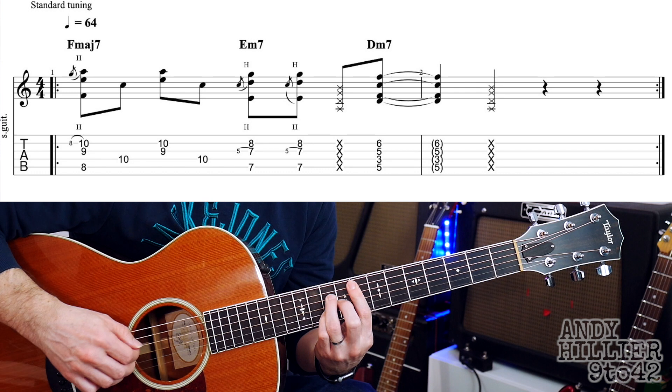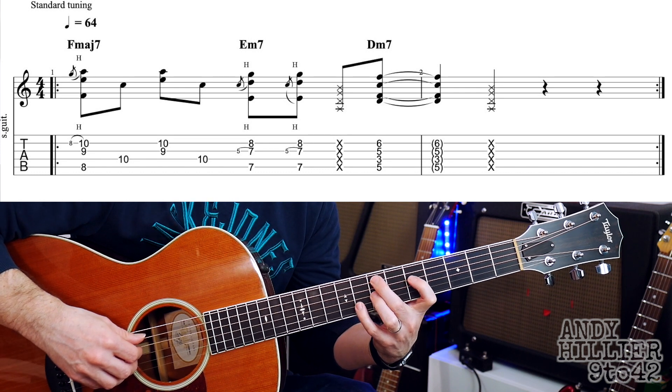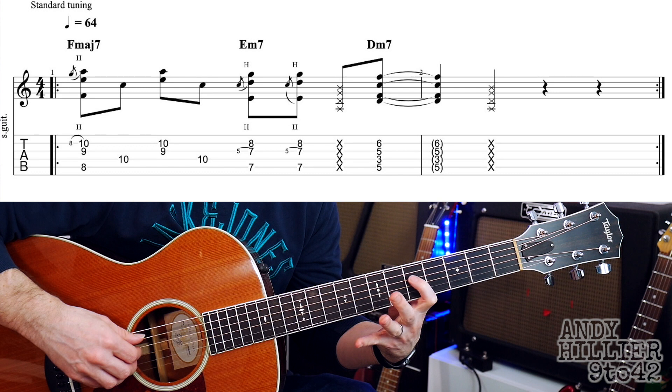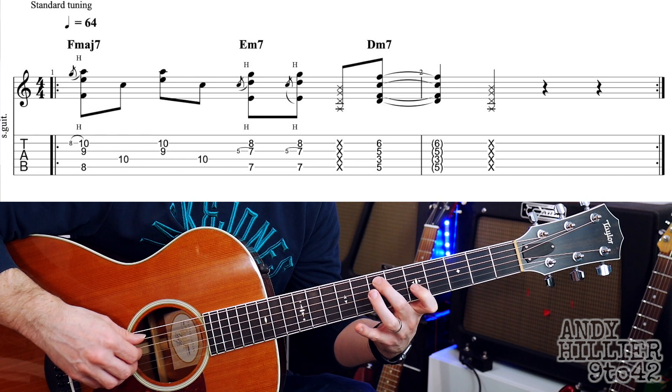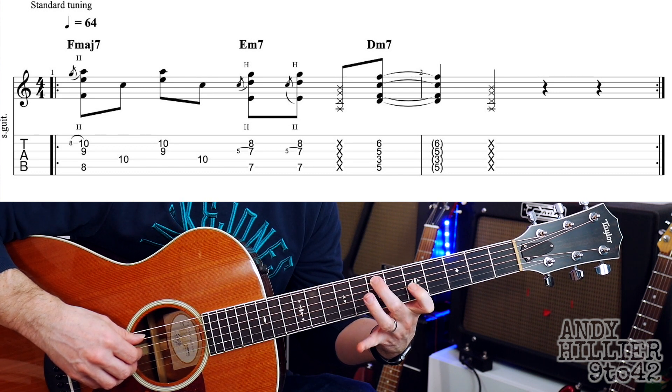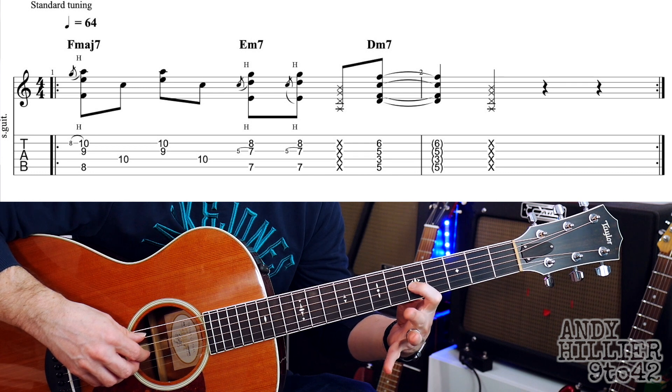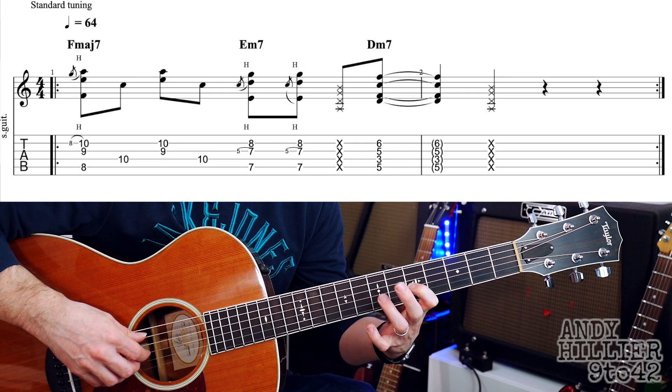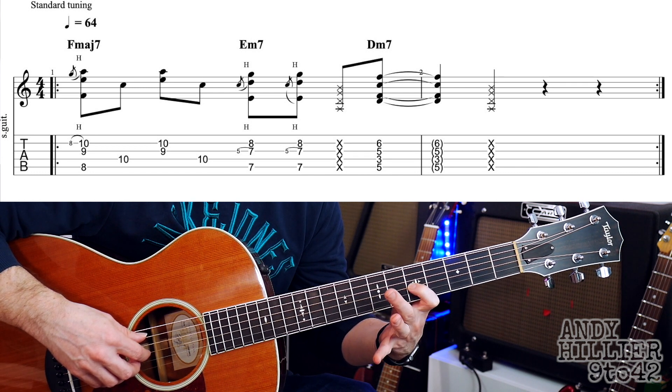And then we're going to go to this shape, which is an E minor 7 chord, which is your first finger is going to go on G5, because we're going to do this hammer-on type thing again.